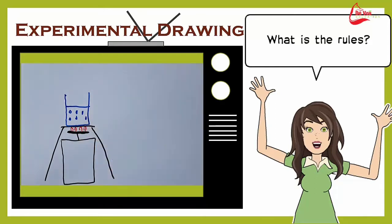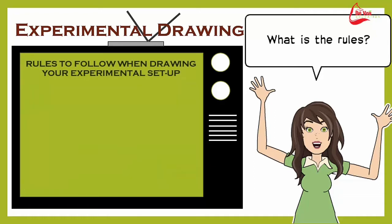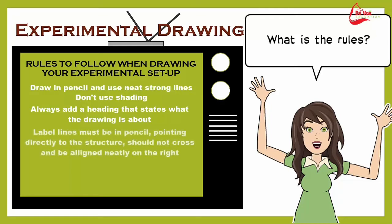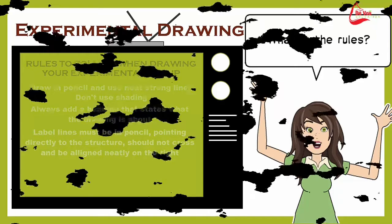There are a few simple rules that you can follow when making this drawing. These would include drawing in pencil and using neat, strong lines. Don't use shading in your diagram. Always add a heading that states what this drawing is about. Label lines should be made in pencil, have them point directly to the structure, they shouldn't cross, and if possible they should align on the right-hand side.